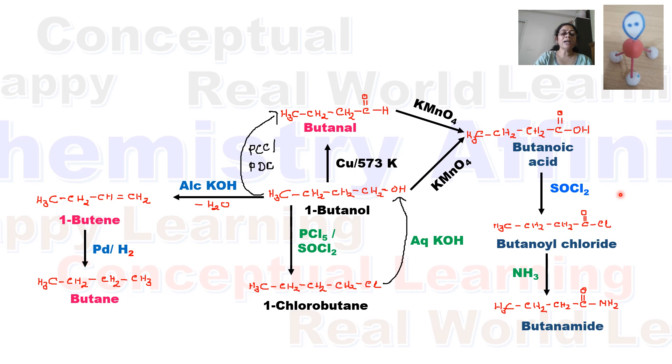If 1-butene undergoes reduction using palladium/hydrogen or platinum/hydrogen, it converts to the alkane butane.